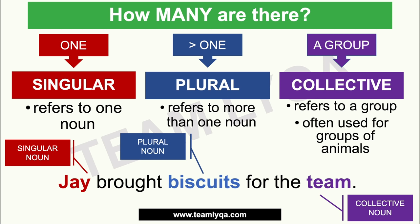It's very important when it comes to subject-verb agreement that we know whether the noun is singular or plural. It's also important to know if it's a collective noun because the rules are different there — for example, when do you say 'a team is' versus 'the team are'? I'll link the collective nouns video in the i-button and in the description box below.